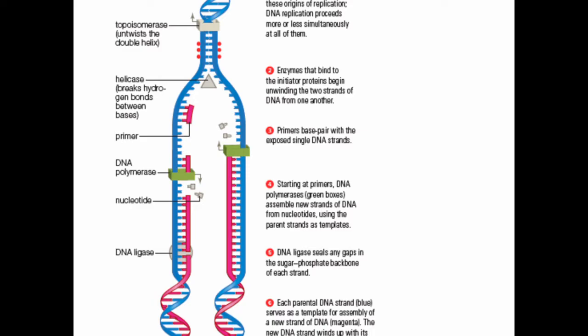The other strand goes in the opposite direction. Because polymerase can only work 5' to 3', that strand has to do discontinuous replication. It forms fragments — the replication of that side is fragmented. We call those fragments Okazaki fragments. Those fragments are then joined together by ligase, which acts somewhat like a glue, joining single-stranded breaks in the DNA. So after finishing one fragment, the polymerase jumps to the next one. When the next part is unwound, another primer attaches and the polymerase adds strands again in the direction opposite to the helicase.